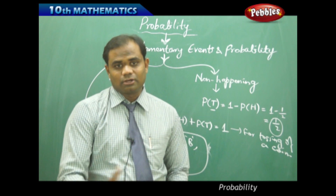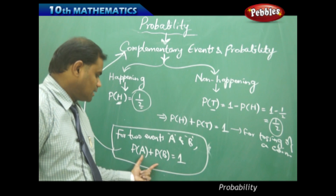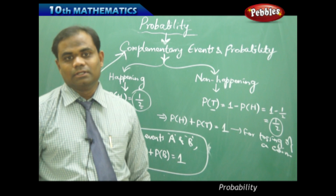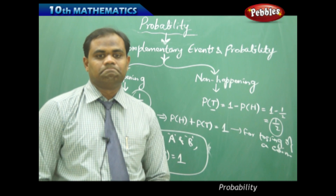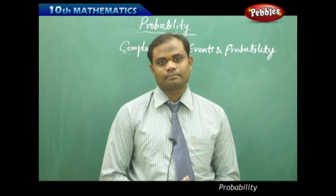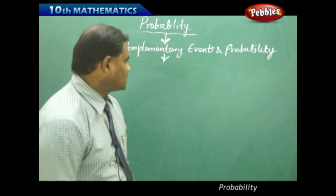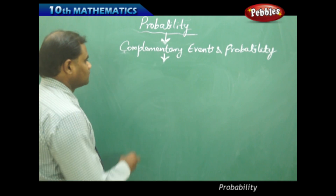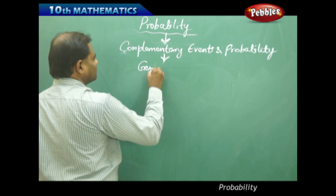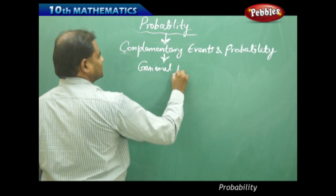When we say two events are complementary, this mathematical formula — P(A) plus P(B) equals 1 — must come to mind. Generally, complementary events are denoted with a standard notation in the following manner.